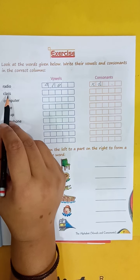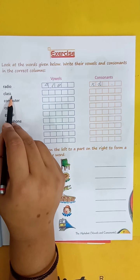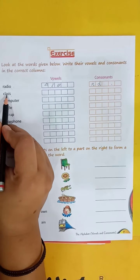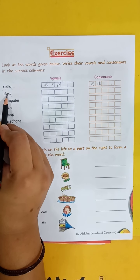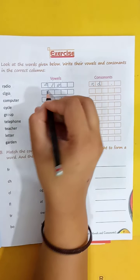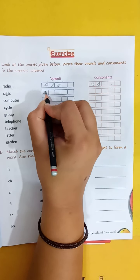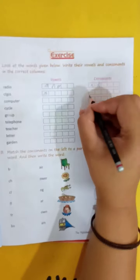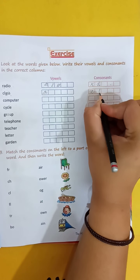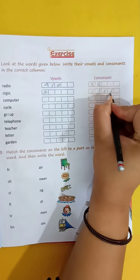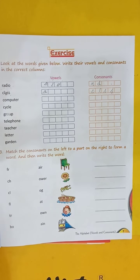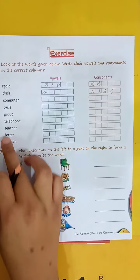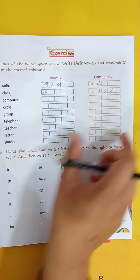The next word is class. In class, there is only one vowel, and the vowel letter is A. The remaining letters are C, L, S, S — these are the consonants. You have to do all the words like this.